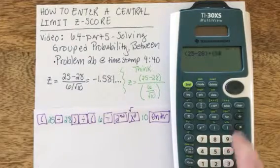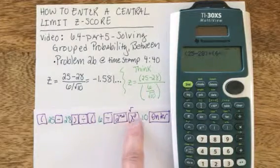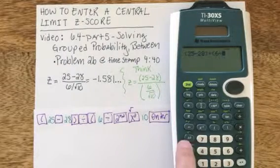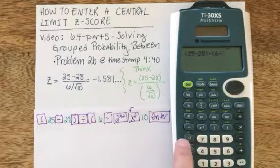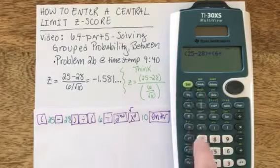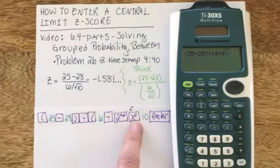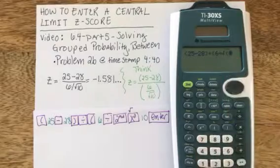6 divided by, and I want the square root of 10. But you'll notice the square root is in light green above the x squared button, so don't forget I have to hit second and then x squared to actually get the square root option, which you can see on the screen.